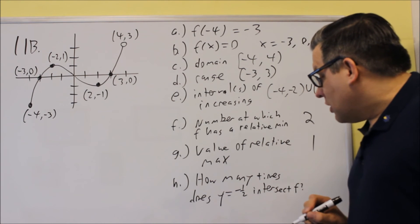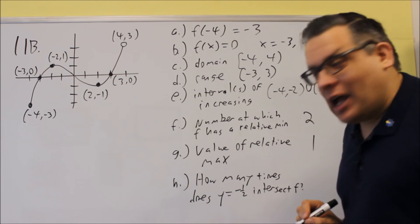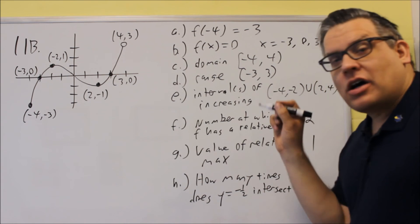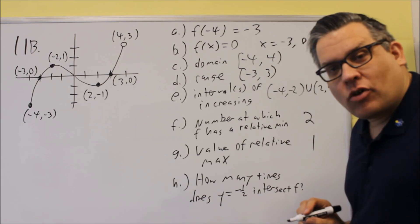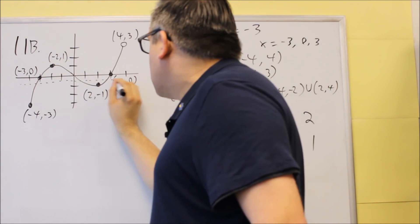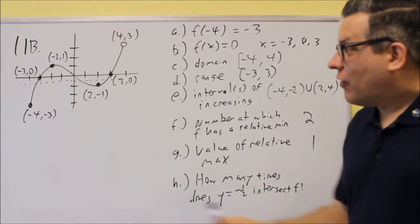Last one, how many times does the line y equal -1/2 intersect f? So once again, I'm going to draw a horizontal line. It's going to go through -1/2. That's going to be right here. And I count how many times it hits the graph. In this case, it's going to be 3 times.